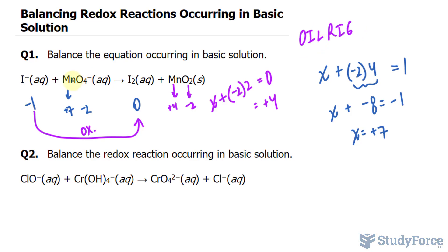And we see that happening here, where we go from plus 7 to plus 4. Obviously, it's becoming more negative, so there is a reduction between these two. Let's write these half reactions down.